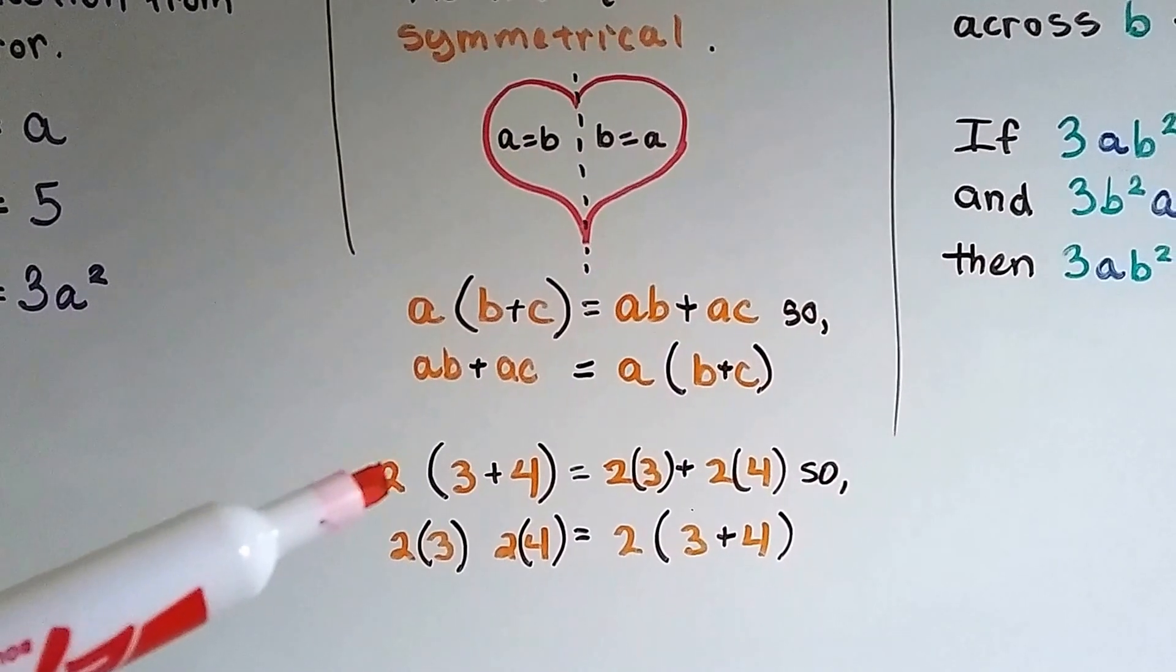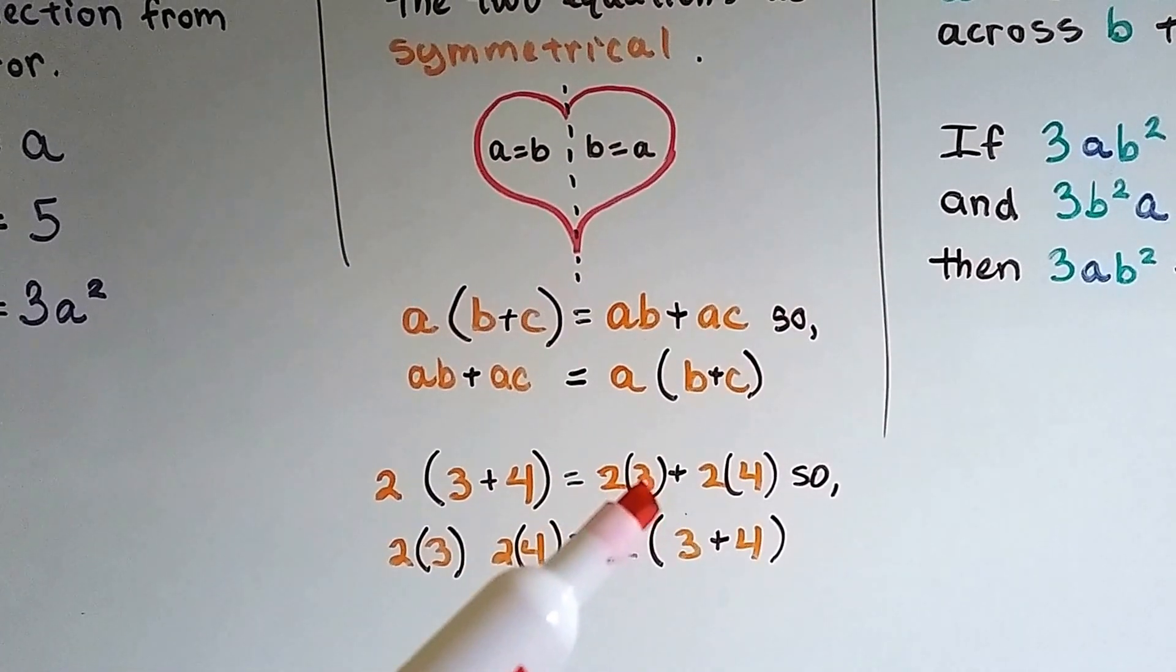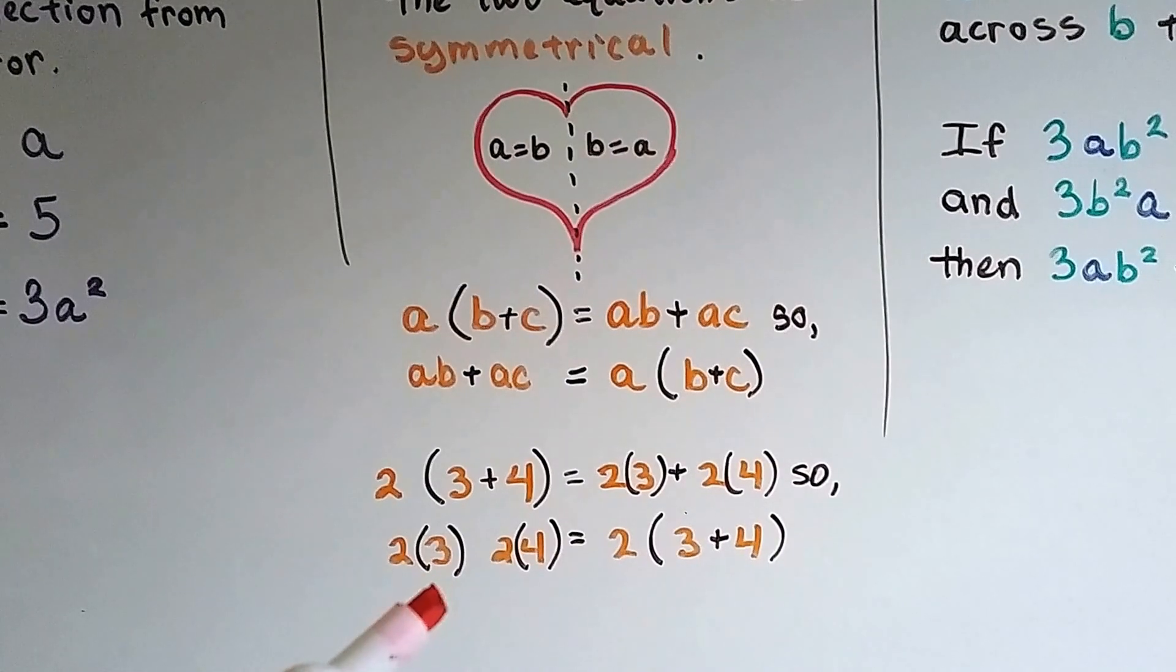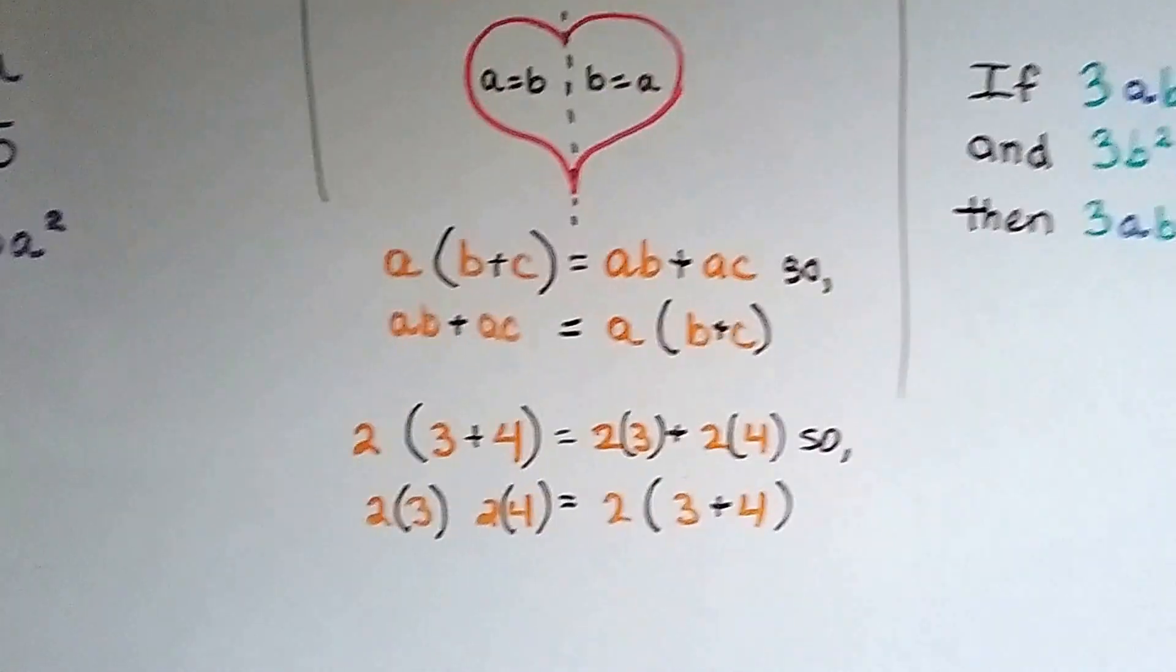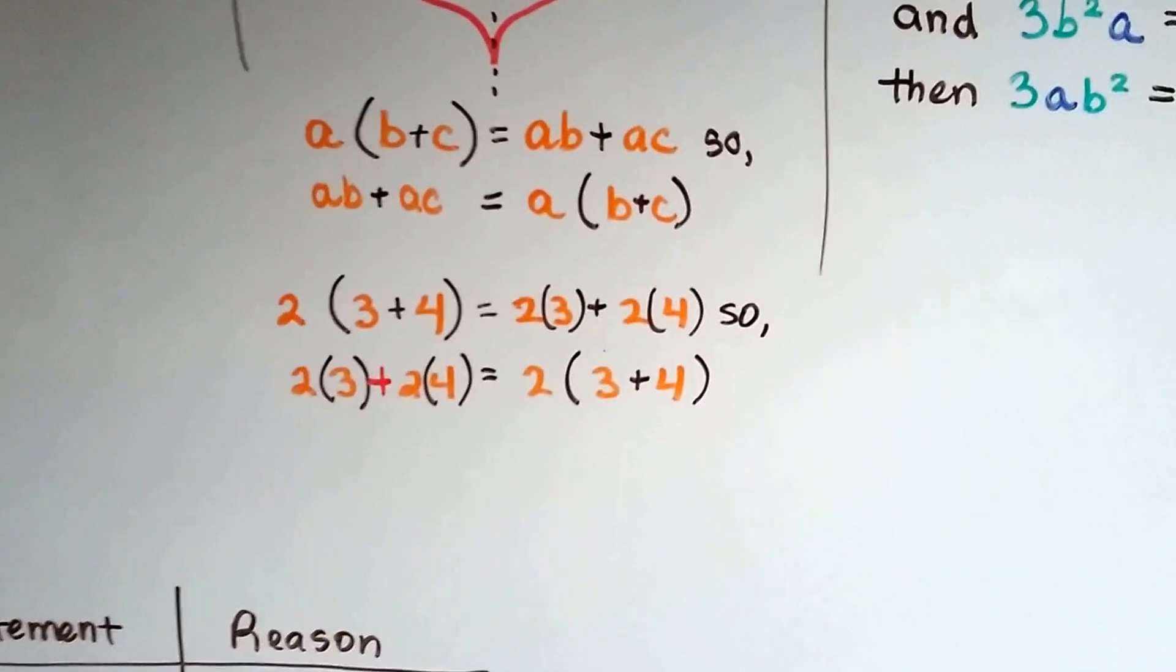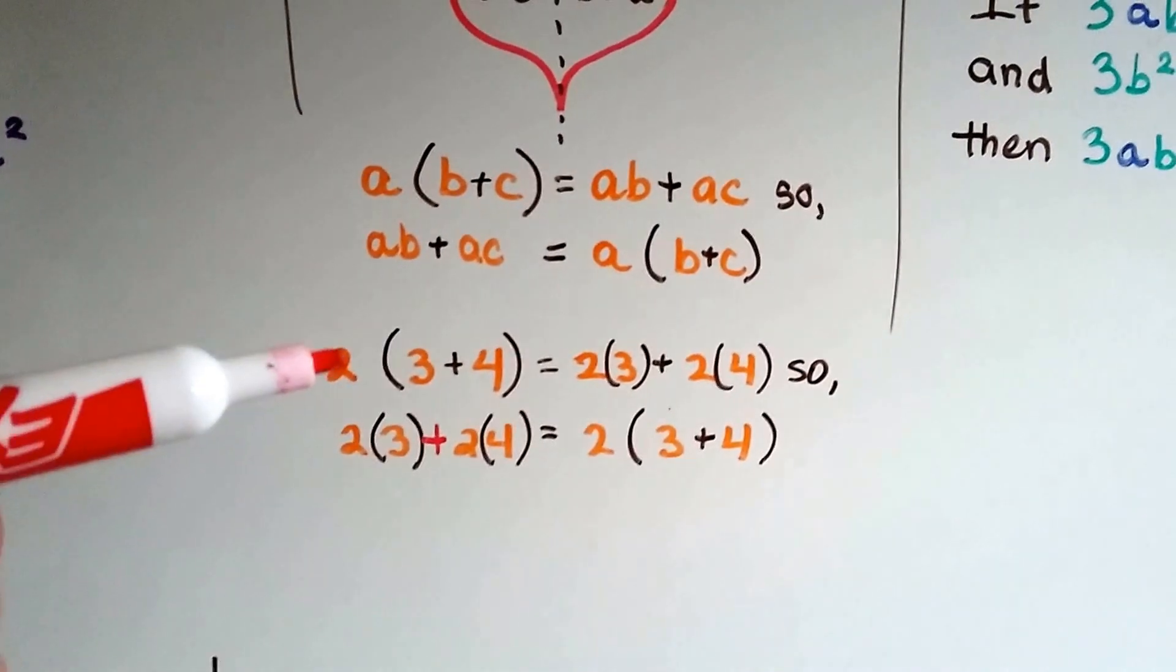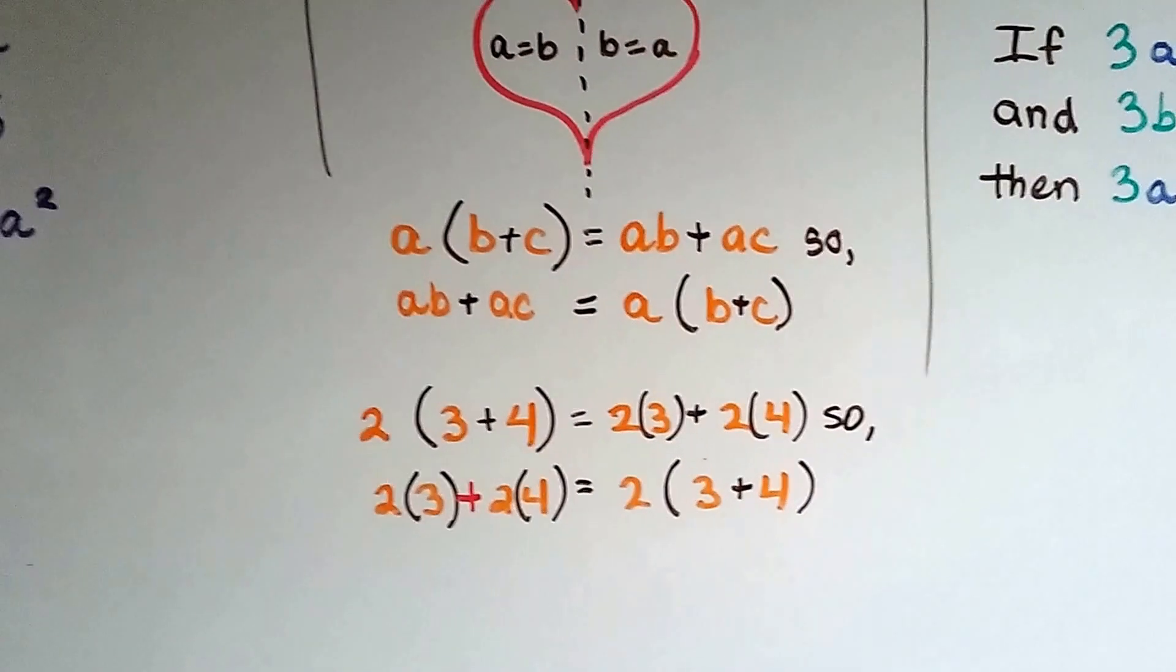It would be like 2 times 3 plus 4 is distributed as 2 times 3 plus 2 times 4. So that means factoring, we can do 2 times 3 plus 2 times 4 is going to be equal to 2 times 3 plus 4. This is the distributive property bringing us here. This is factoring bringing us there.